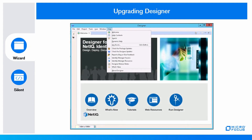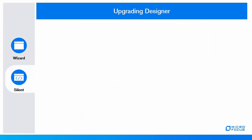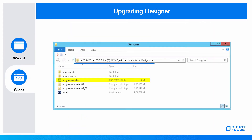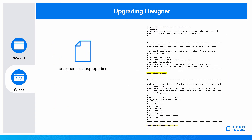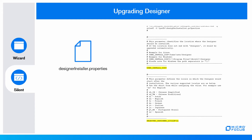Go to the Help tab and check for Package or Designer updates. In silent mode, open the silent properties file at the specified path. In User Install DIR, specify the older version of Designer path. In Selected Designer Locale, specify the required language you want Designer to launch after installation.